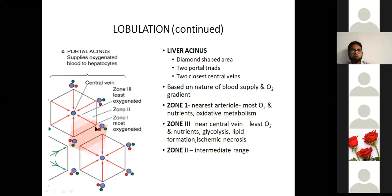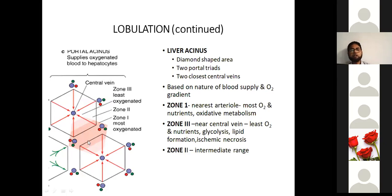Zone 1 is nearer to the portal triad. Zone 3 is nearer to the central vein. Zone 2 is in between. Zone 1, zone 2, and zone 3 tell us the concentration of oxygen present in the blood in the hepatocytes.